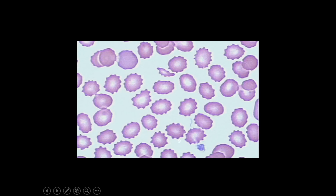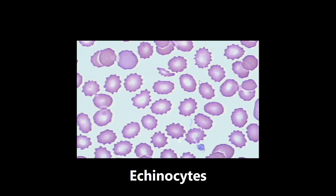This is an example of echinocytes, also called burr cells. These are red blood cells with a thorny, spiky appearance seen in several conditions that are important to know. First is pyruvate kinase deficiency, where you'll have problems with glycolysis. They can also be seen in uremia in patients with kidney failure, in microangiopathic hemolytic anemia, and from mechanical damage. So four main conditions: if you see a blood smear with these echinocytes — also called burr cells — know those associations.